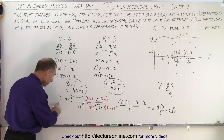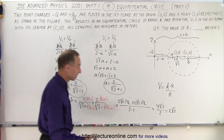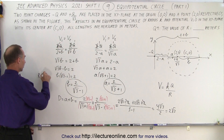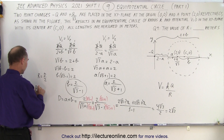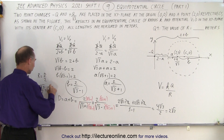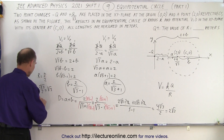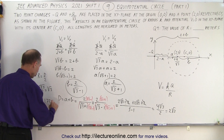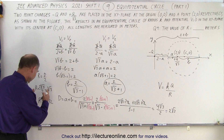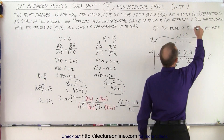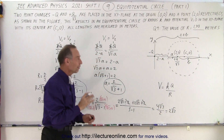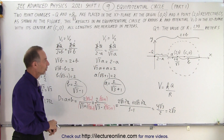Since the radius is half the diameter, the radius equals 2 times the square root of 3 divided by 2, which equals the square root of 3, approximately 1.732. The instructions ask for two decimal places, so the radius is 1.73 meters — that is the radius of the equipotential circle. And that is how it's done.